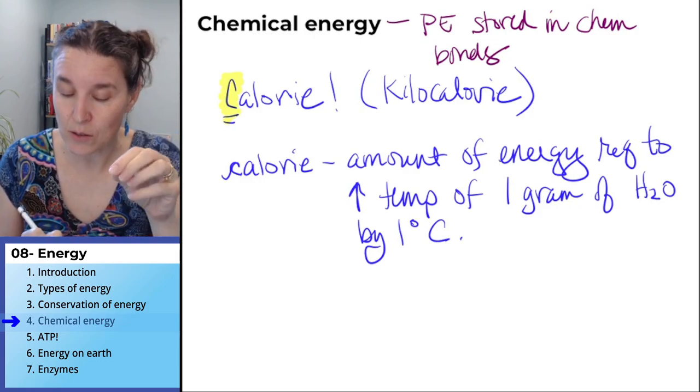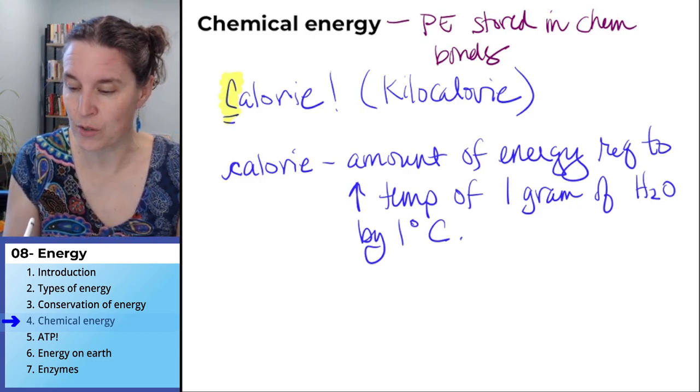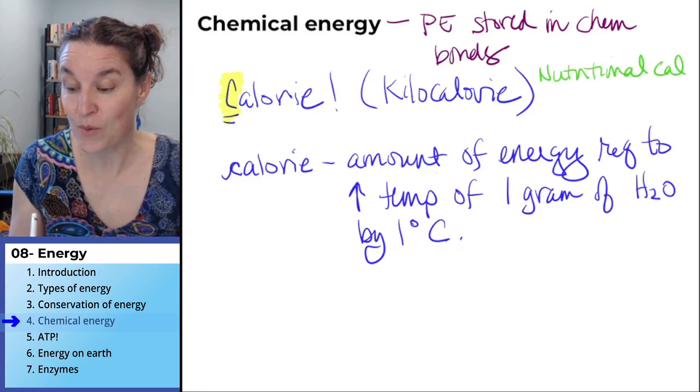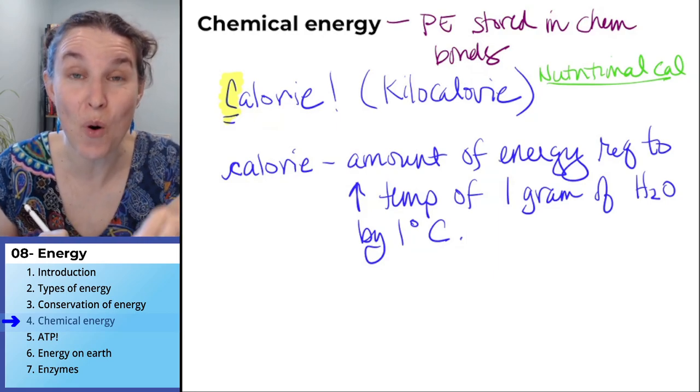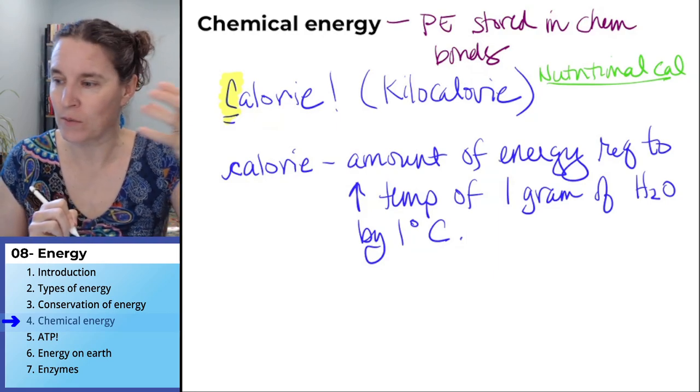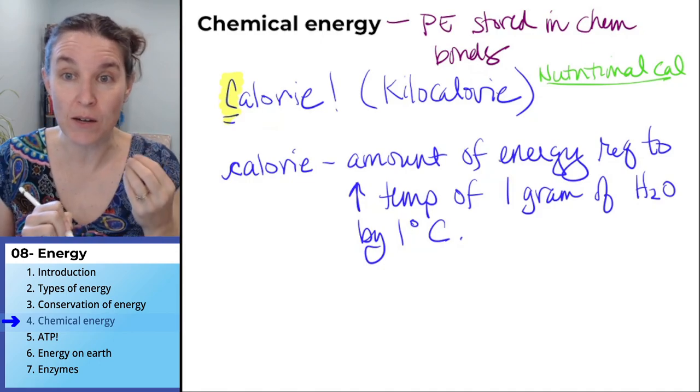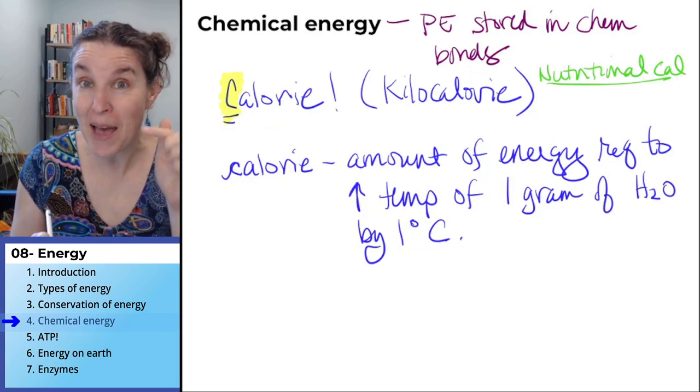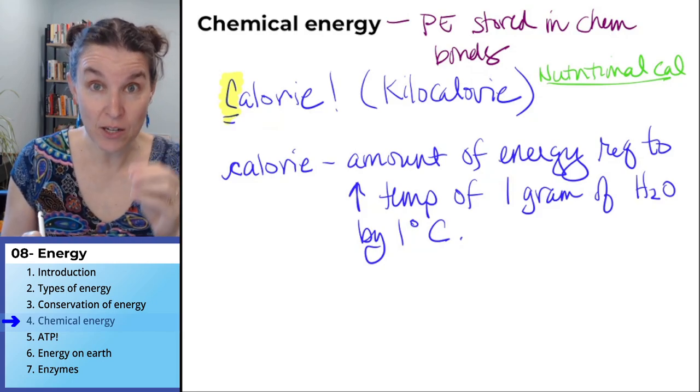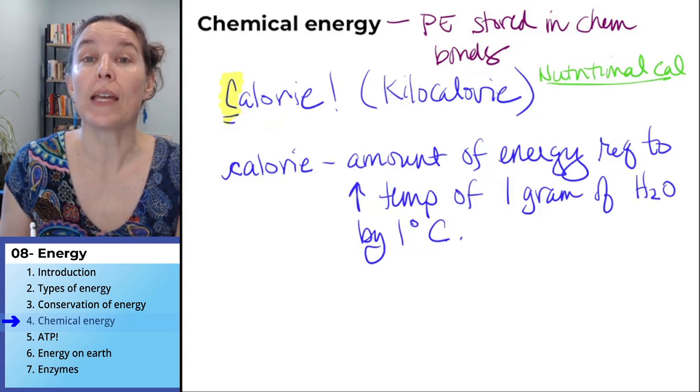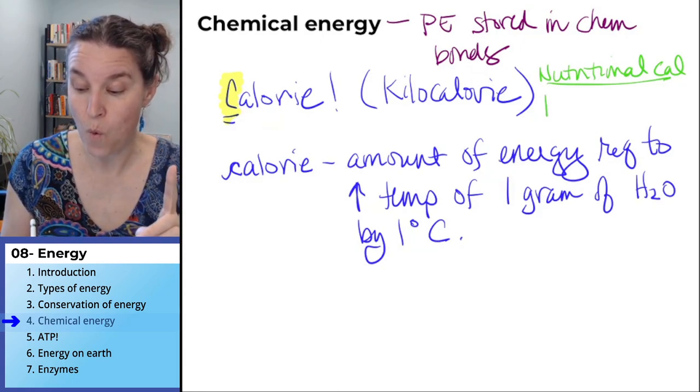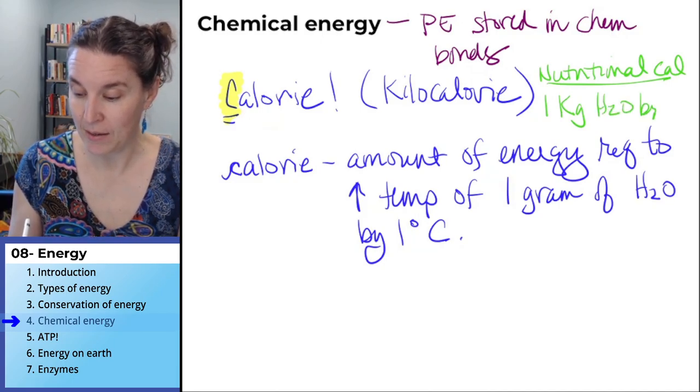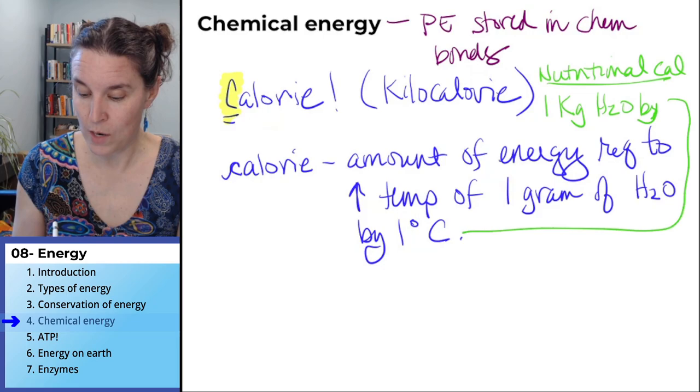A lowercase calorie heats one tiny gram of water by one degree Celsius. A big Calorie, which is a nutritional calorie, is the kind reported on your food nutrition label. It's actually kilocalories, the amount of energy required to increase the temperature of one kilogram of water by one degree Celsius.